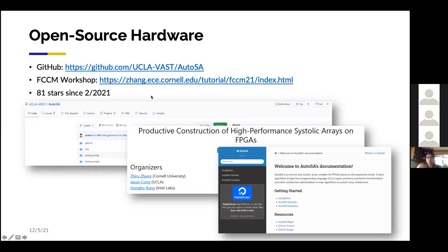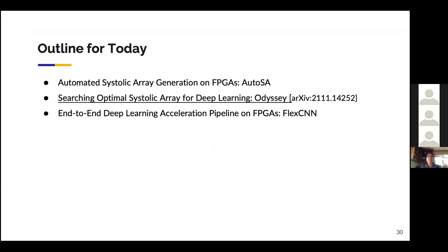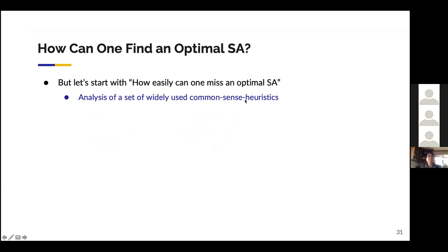The second part of the talk covers how we search for the best systolic array solutions. Before explaining how to generate the optimal design, let me discuss how easily we can miss a good one. We'll analyze some widely-used, common-sense-based heuristics in the literature.